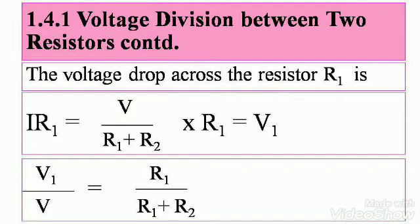Rearranging the terms, we get V1 divided by V equals R1 divided by R1 plus R2. You can use this to find the voltage drop across resistor R1. This can be rearranged further also as V1 equals R1 divided by R1 plus R2, whole thing into V, any which way.